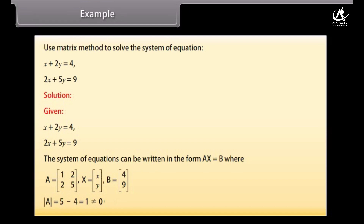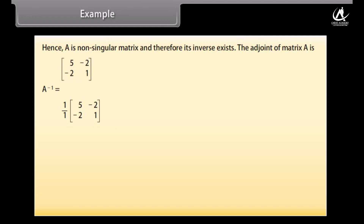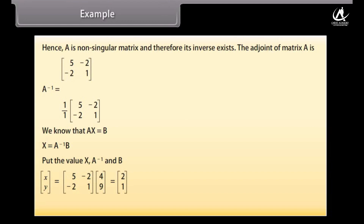det(A) = 5 - 4 = 1, which is not equal to 0. Hence A is non-singular and its inverse exists. adj(A) = [[5,-2],[-2,1]]. Inverse of A = 1·[[5,-2],[-2,1]]. Since X = A⁻¹·B, we get X = [[5,-2],[-2,1]]·[[4],[9]] = [[2],[1]]. Hence x = 2 and y = 1.